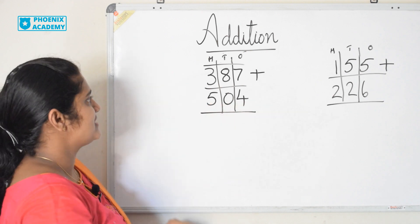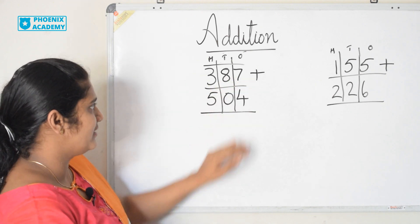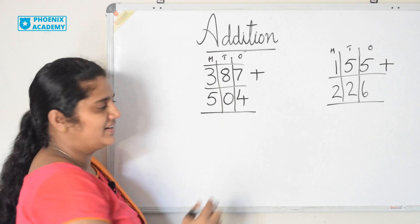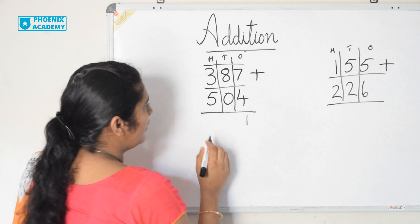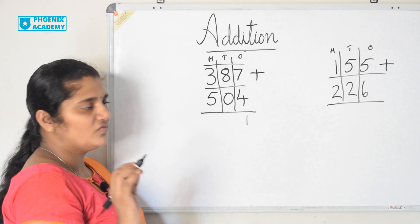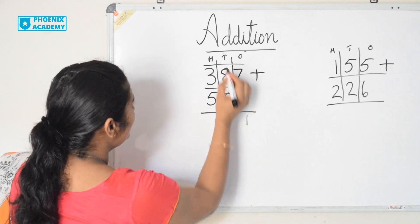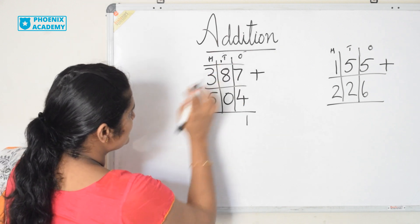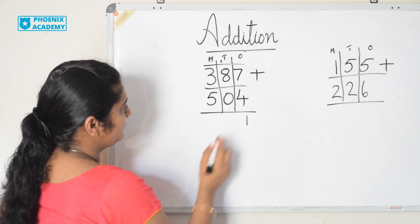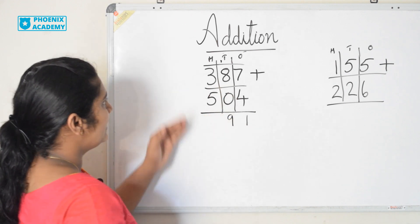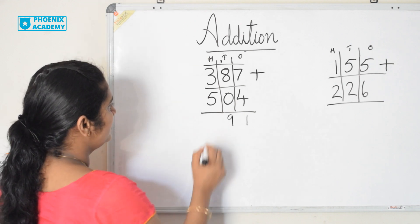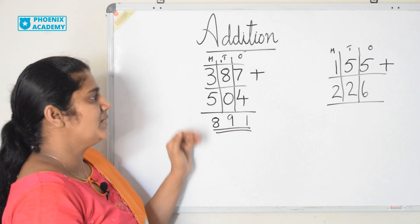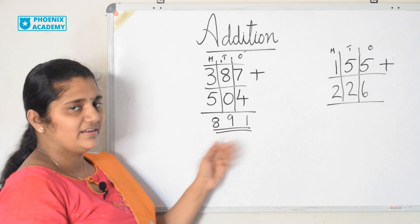Let's solve these examples. 387 plus 504. Let's add the 1's. 7 plus 4 is 11. 11 is 1 ten and 1 one. So I write 1 here and 1 carry forwarded to the 10's place. Now let's add the 10's. 1 plus 8 is 9. 9 plus 0 is 9. Let's add the 100's now. 3 plus 5 is 8. So the sum of 387 plus 504 is 891.